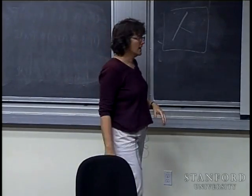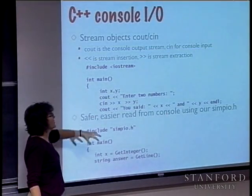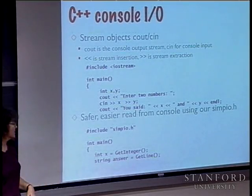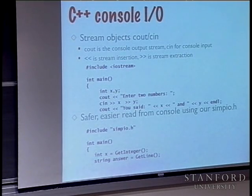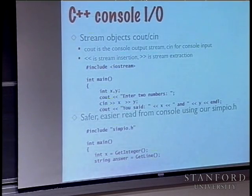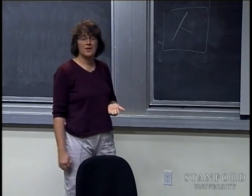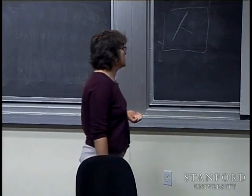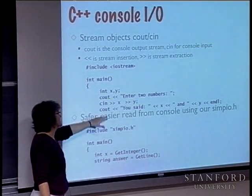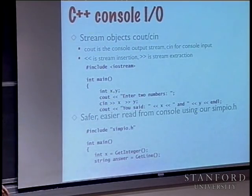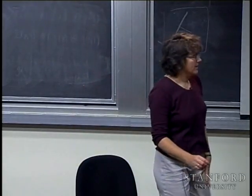That messy handling is why we've provided things like getInteger, getLine, and getReal in the simple I/O library — they manage that for you. Basically, in a loop they try to read the integer off the console, and if it fails, they reset the stream, go back around, and ask the user to try again until they get something well-formed.